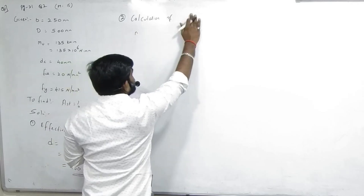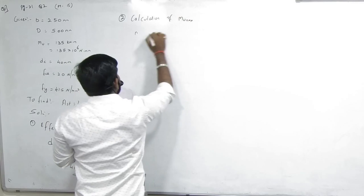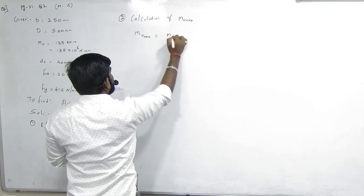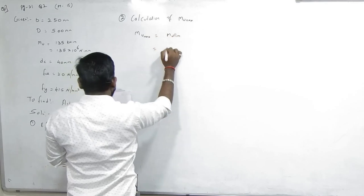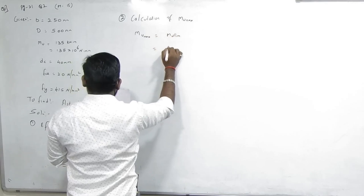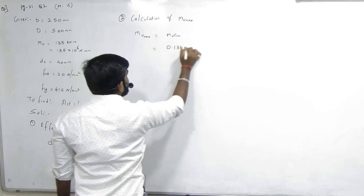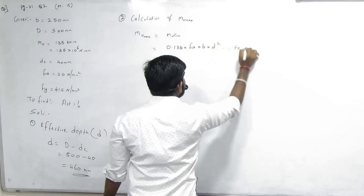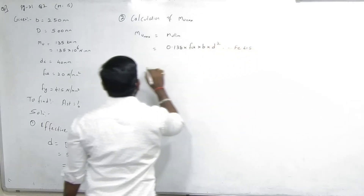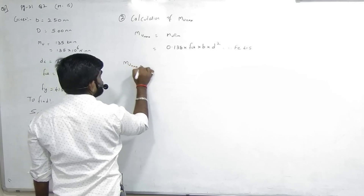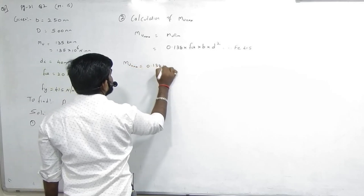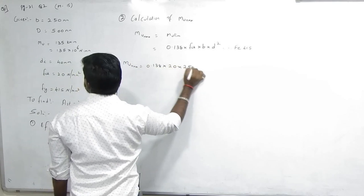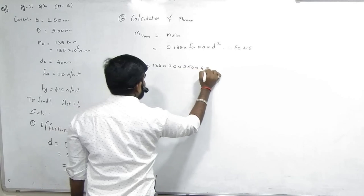MU.max = MU.limit. Formula for FE 415: MU.max = 0.138 × FCK × B × d². Substituting: 0.138 × FCK=20 × B=250 × small d=460 squared.